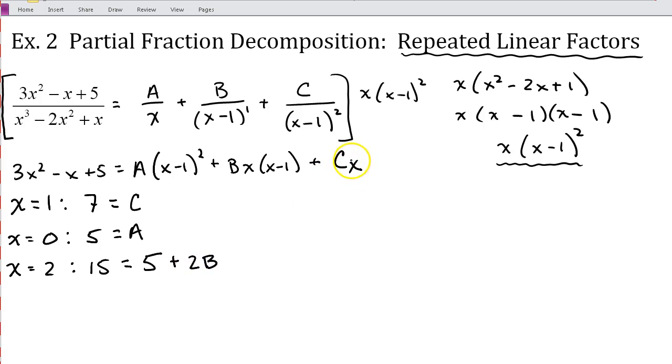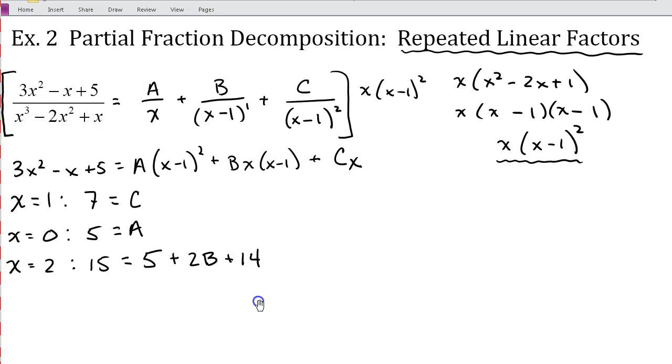And then when I plug in 2, I'm going to have 2 times C, which was 7, so that's plus 14. And then I just need to solve this for B. So that's going to be 19, so I'll subtract 19 from both sides. And we'll get negative 4, negative 4 divided by 2. So we should get that B is equal to negative 2.